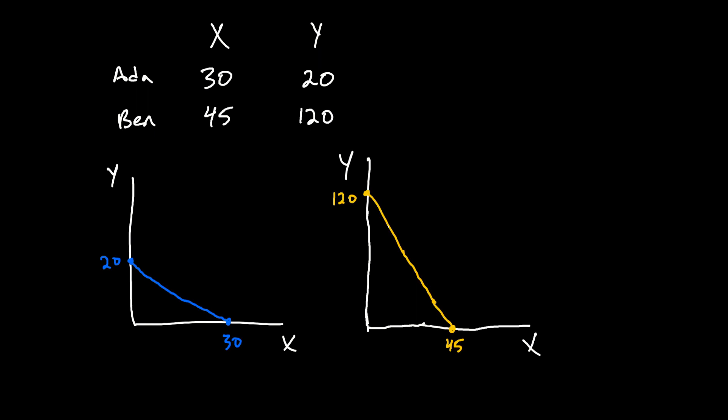Now that we've drawn their production possibility frontiers, I'll label them: this is PPF sub b, and this is PPF sub a. Now let's calculate Ada and Ben's opportunity costs associated with the production of good x and good y.